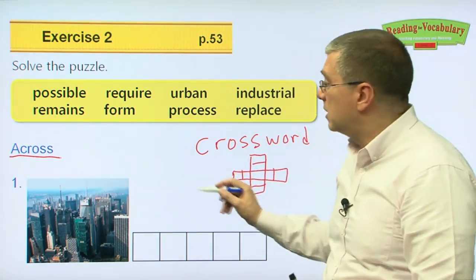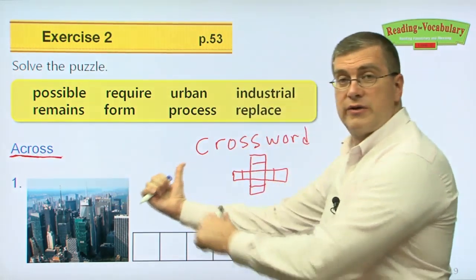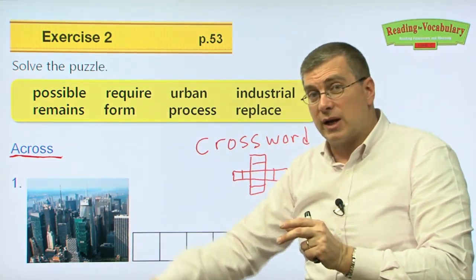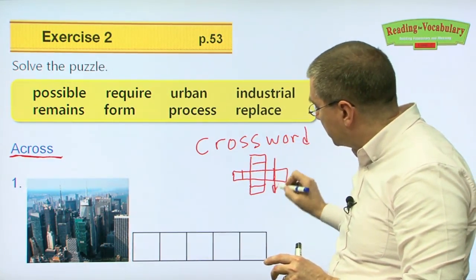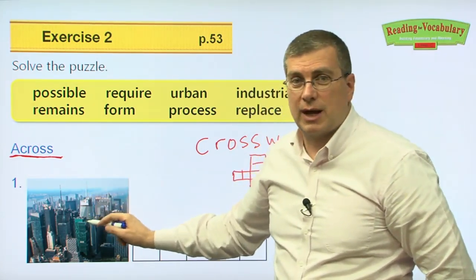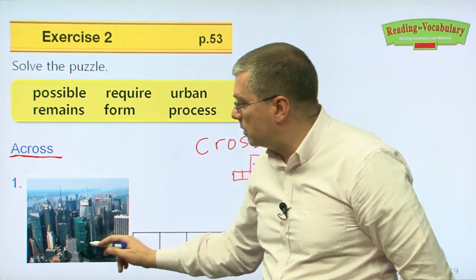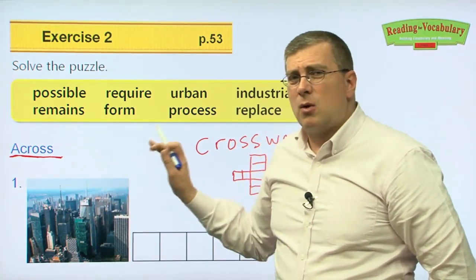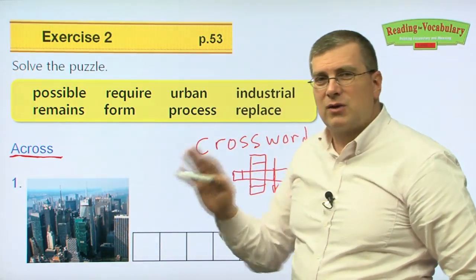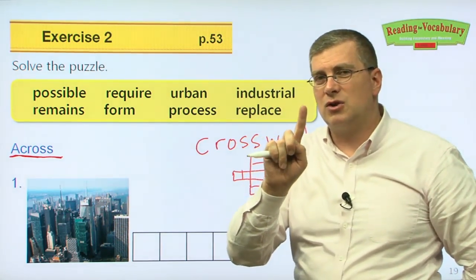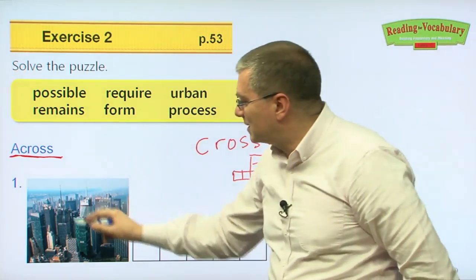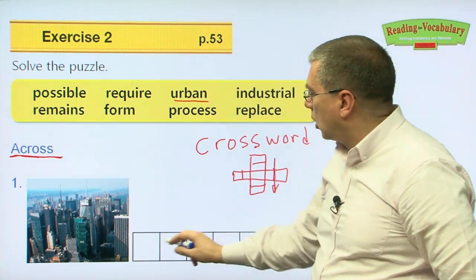When you do a crossword puzzle, they give clues for words going across, and then clues for words going down. First, we'll talk about the words going across — the clues are pictures. For number one, the clue is a picture of a city. When we talk about the city setting, what do we say? In the city, you say it's urban; in the countryside, it's rural. Since this is a city, the word we need is 'urban' — five letters: U-R-B-A-N.